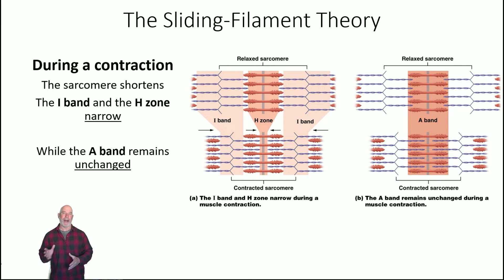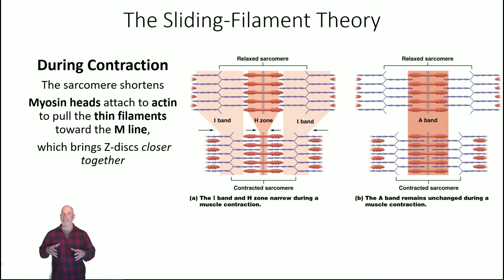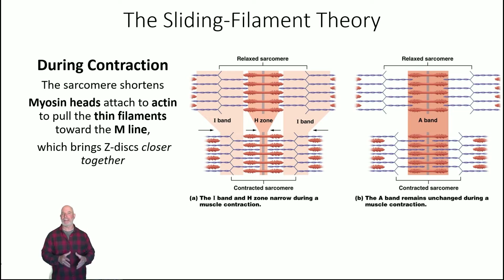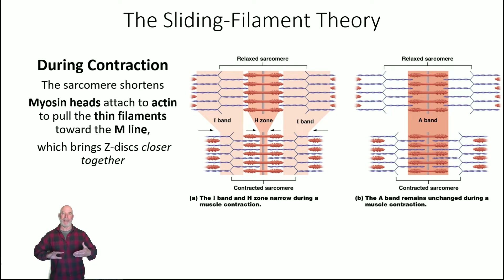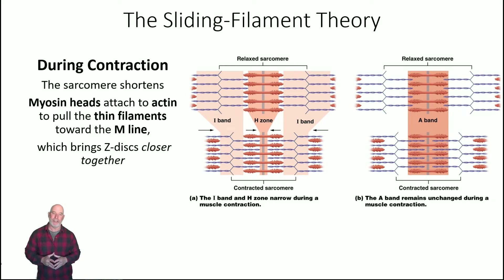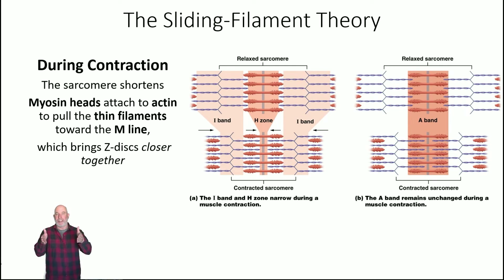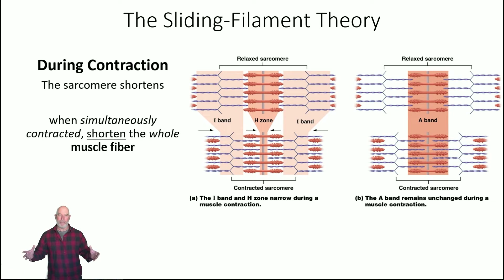During contraction, the sarcomere shortens: the I-band and the H-zone narrow, but the A-band remains basically unchanged. This happens because the myosin heads attach to the actin filaments at their active sites, and the myosin heads move and pull the actin past them — sliding toward the M-line. That brings the Z-discs closer together, the sarcomere shortens, and this is repeated across the entire myofibril to produce contraction.